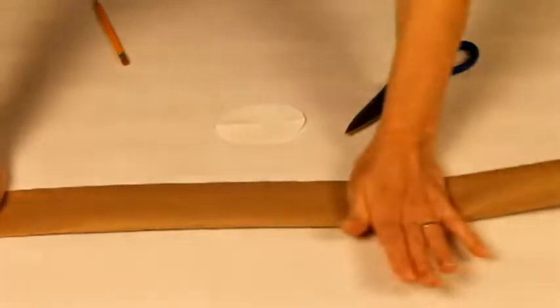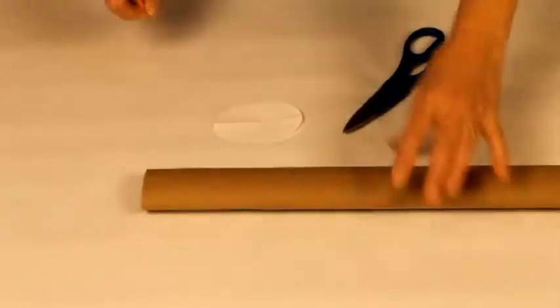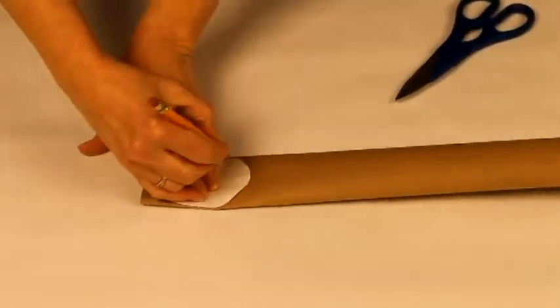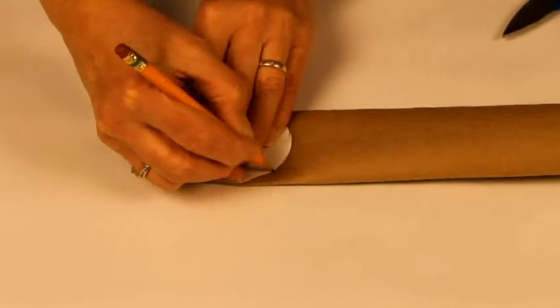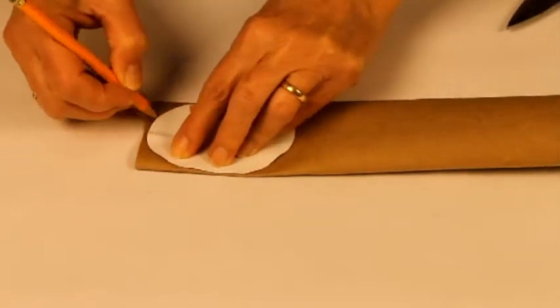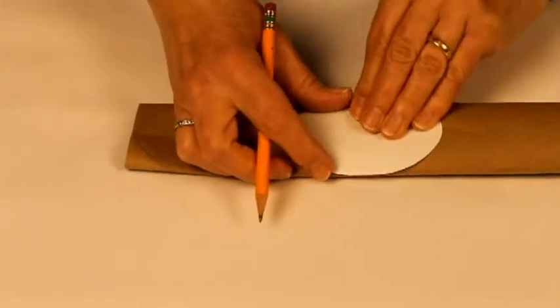Start by flattening one tube and place the pattern on the flattened tube. Trace the pattern onto the tube with a pencil. Each end is rounded to be able to articulate the snake.